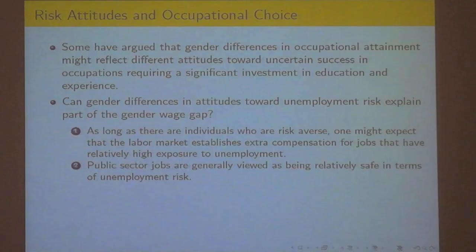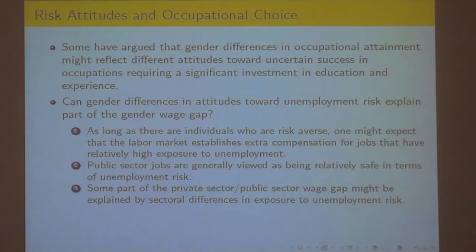We're also looking in the laboratory at unemployment risk — how do men and women differentially respond to the chances of being unemployed and not getting paid at all? A labor market would establish compensation so that risky jobs pay a higher wage when you're working, but you risk not working as often. Some argue that's one difference between public and private sector: public sector chances of being unemployed are less than in the private sector on average, which is why the public sector pays less. If women tend to be in the public sector more frequently than men, that could account for some of the wage gap.